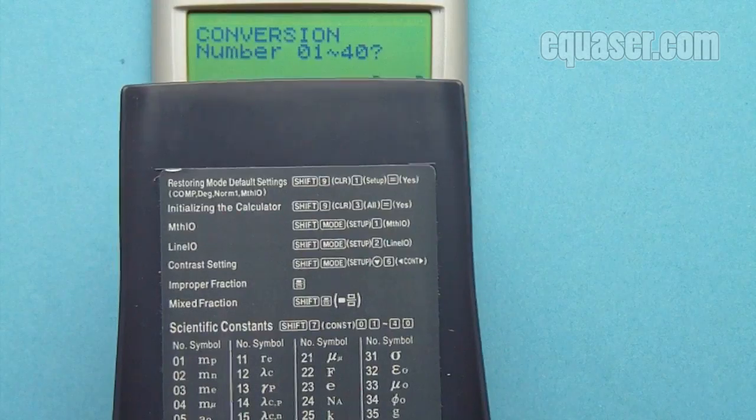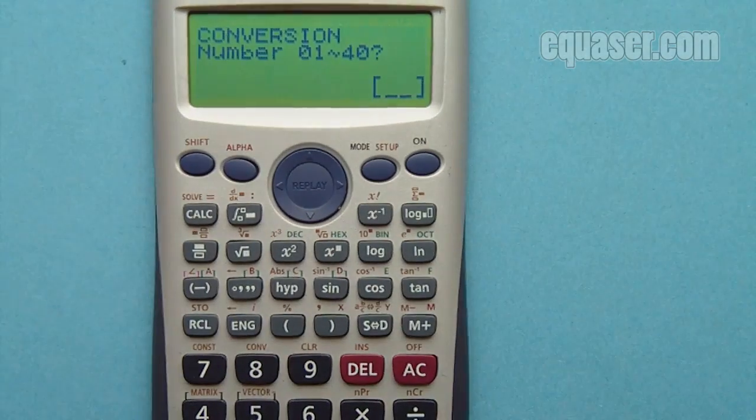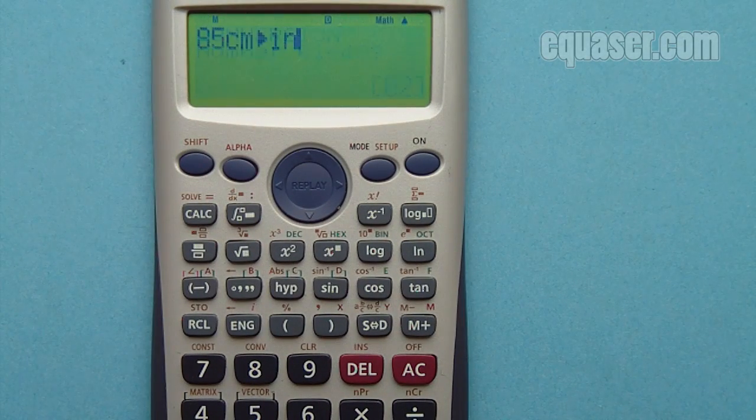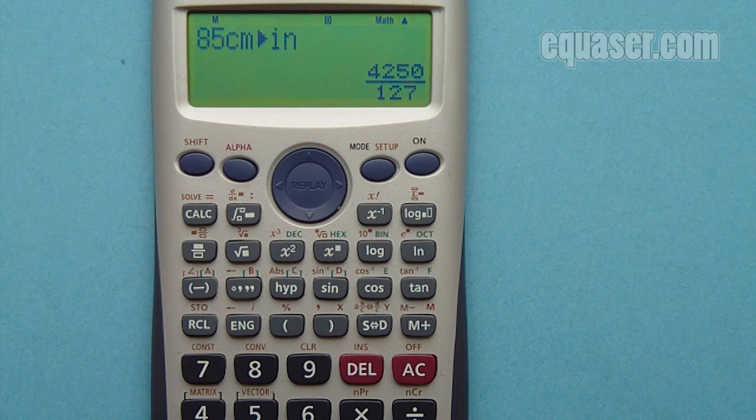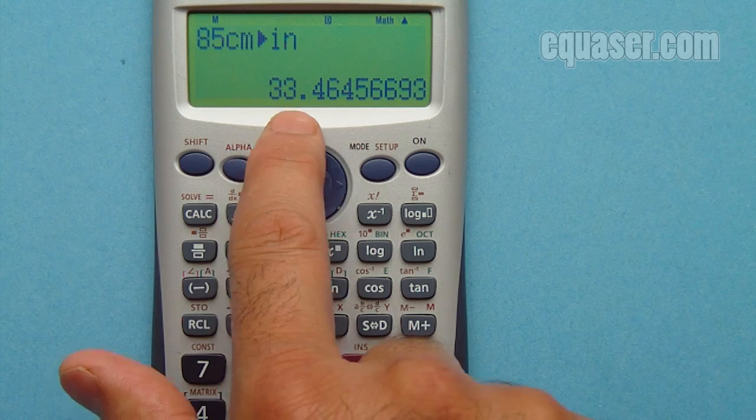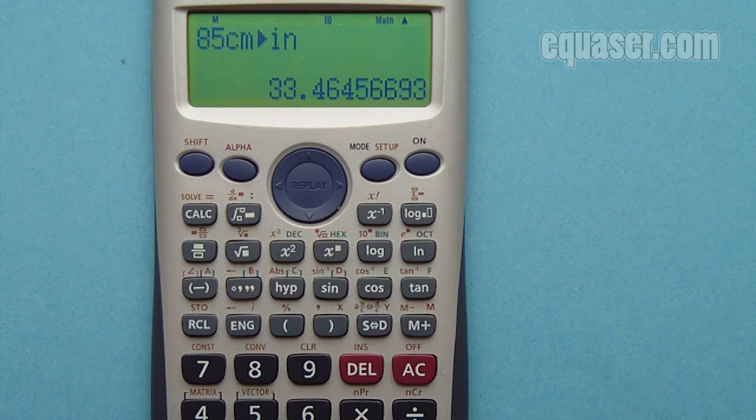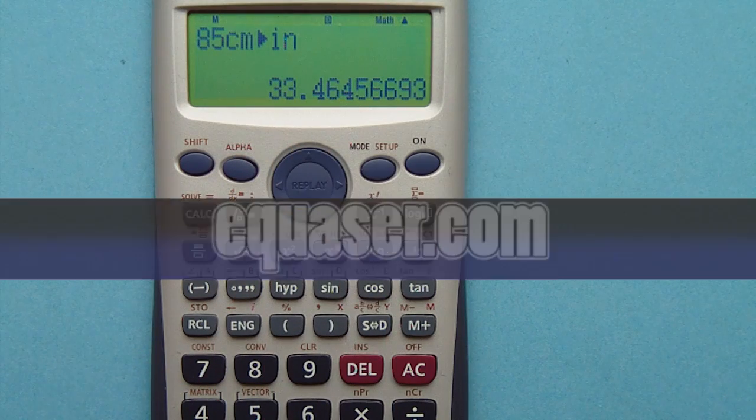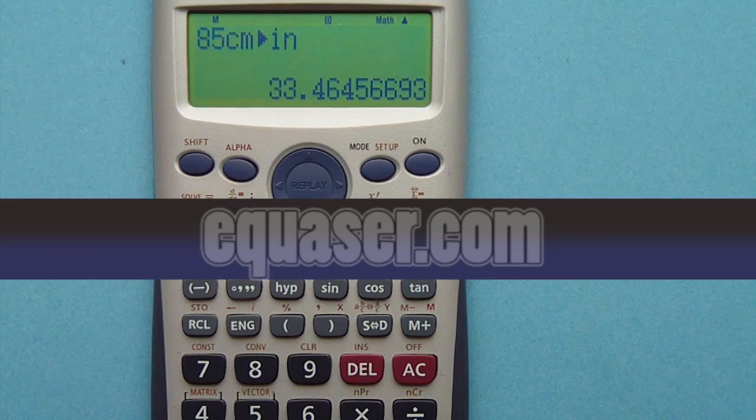By pressing equal sign we are getting the value. So 85 centimeters is 33.46 inches. This was a tutorial from Equasor.com. Thank you for your attention.